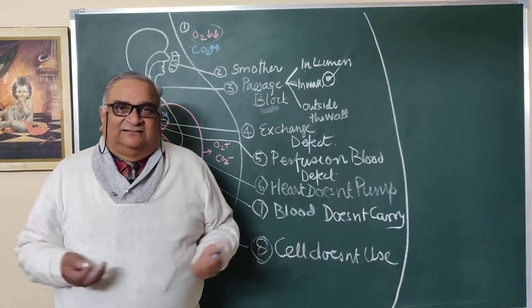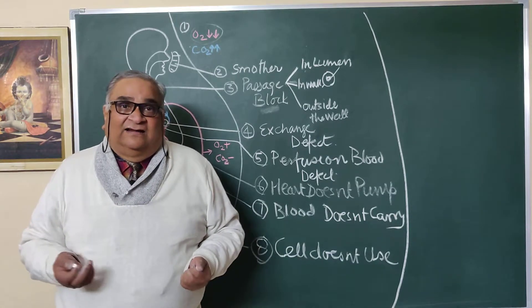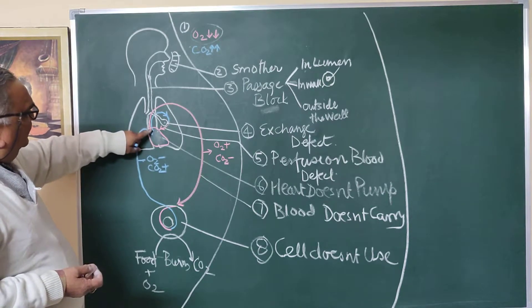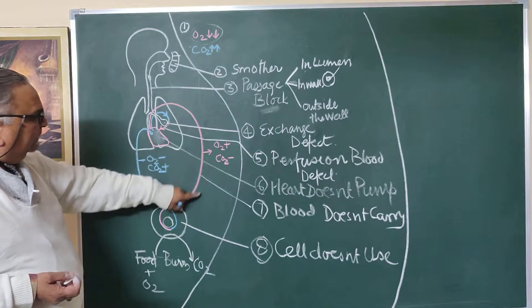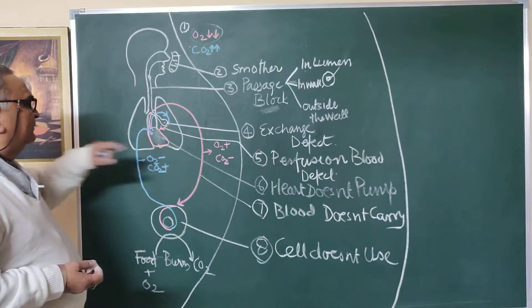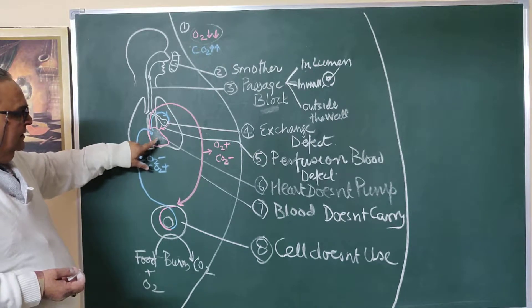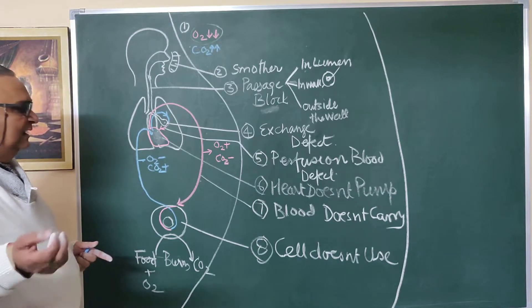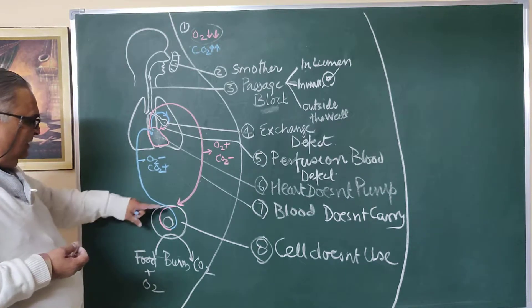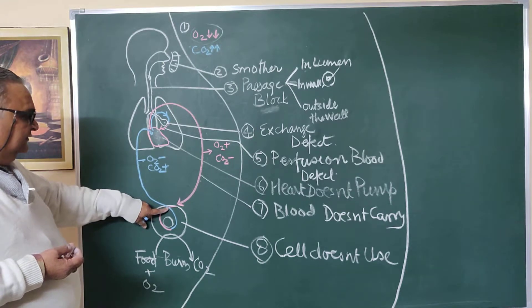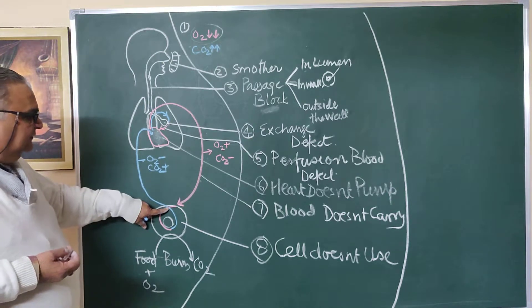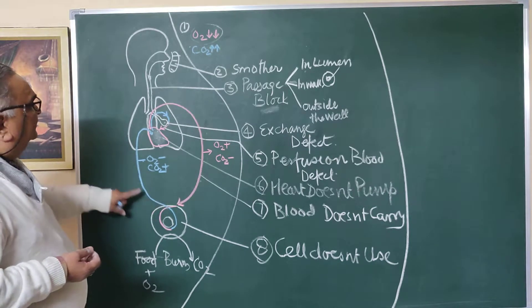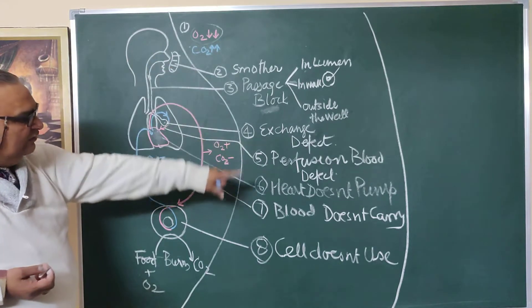When the person is locked up in a car and the exhaust fumes having a lot of carbon monoxide keep on collecting inside the car which is on fire. Then the heart may not be able to pump the blood through, so there may be a pump failure here. Blood may not carry the oxygen - anemia and carbon monoxide poisoning as I have told. The cell may not be able to use the oxygen and carbon dioxide as in case of cyanide poisoning.